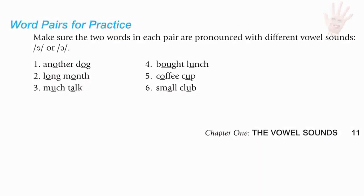Word combinations for Uh and Aw: another dog, long month, much talk, bought lunch, coffee cup, small club.